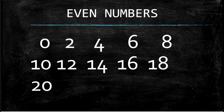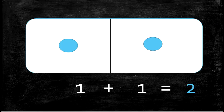So let's look at our doubles. Our first double is 1 plus 1. So 1 plus 1 equals 2. If you have 2 of something and you split it up evenly, it's 1 plus 1.